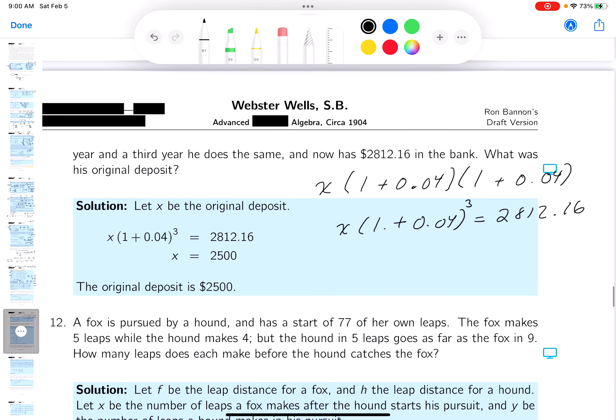Now granted, I don't want to kill you with arithmetic here. I thought I was going to do it, but I really, I'm going to tell you what the arithmetic would look like. And what's it going to look like? Well, this is going to be x times 1.04 cubed equals 2812.16. I want to warn you about this, though.